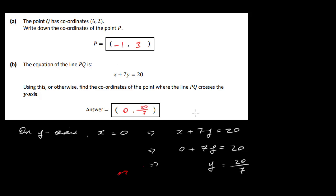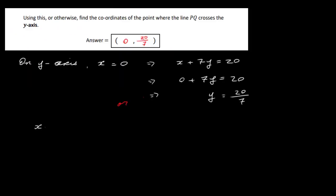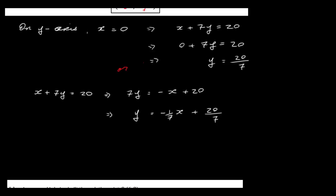The other way we can do this is by taking this here and changing it to look like y equals mx plus c. So it's x plus 7y equals 20. We just change that around, leave the y on this side: 7y equals minus x plus 20. Then divide by 7, so y equals minus 1 over 7x plus 20 over 7. This is in the form y equals mx plus c. The m here gives us the slope and the y-intercept is given by 20 over 7, which is what we got anyway. The y-intercept is 0 and 20 over 7.